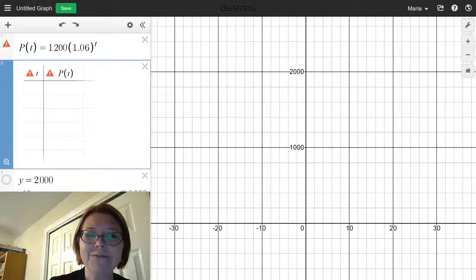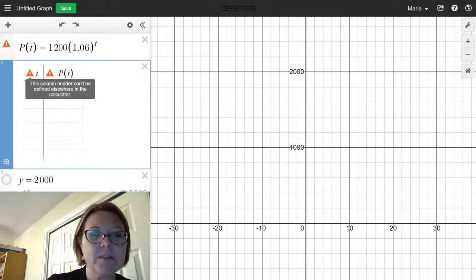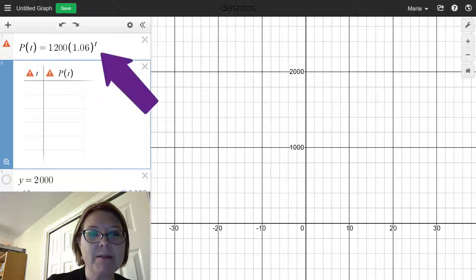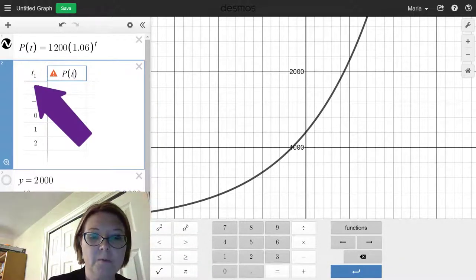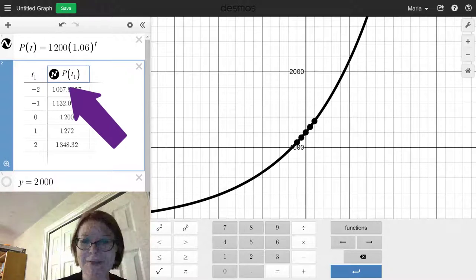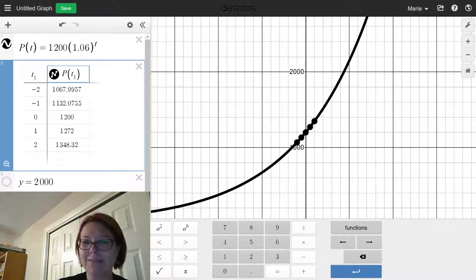Now when I ask for that table of values, I get all of these errors. And if you click on one of the errors, you'll see the column header can't be defined elsewhere in the calculator. The problem is I've got t defined up here, right? So if I just change this to a t sub 1 and p(t sub 1), it will fill out the table for me and give me some points on the graph. So that's kind of nice.